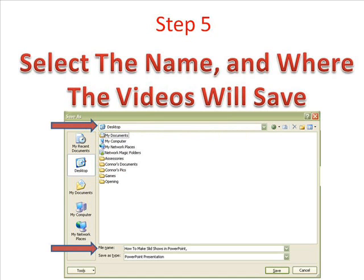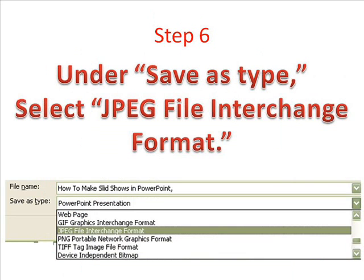Step 5: Select your name and then select where you are going to save your video, but don't click save yet. Step 6: Under Save As Type, select JPEG File Interchange Format, and then you can click save.